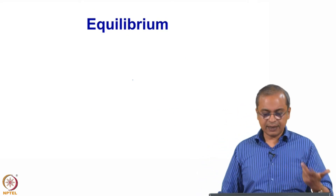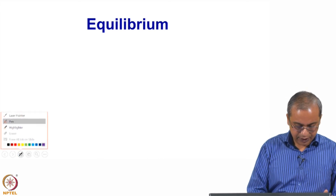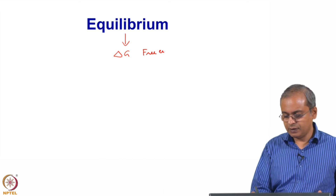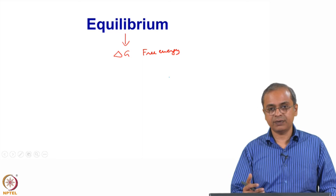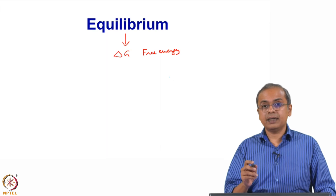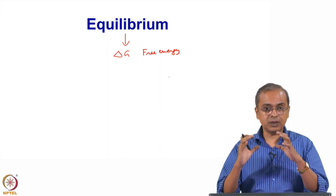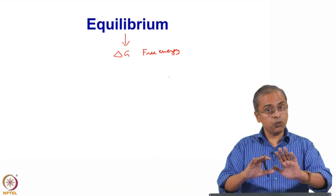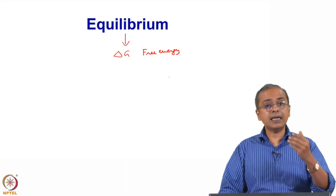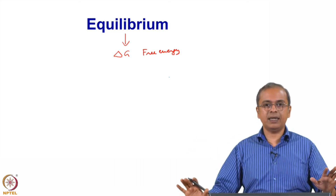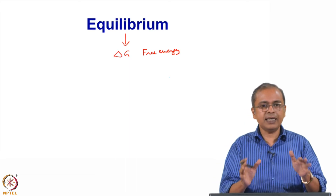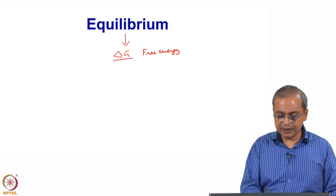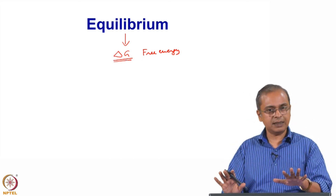Equilibrium is a concept defined by delta G and the free energy changes associated with the reaction. Equilibrium is what nature moves towards — if you leave a system indefinitely, it will sit in the lowest energy state it can attain. There is no other drive to change; it has found its lowest free energy and stays there. That is equilibrium.